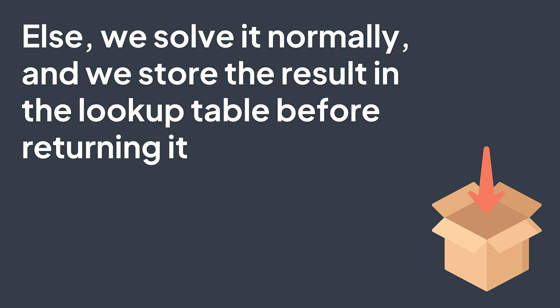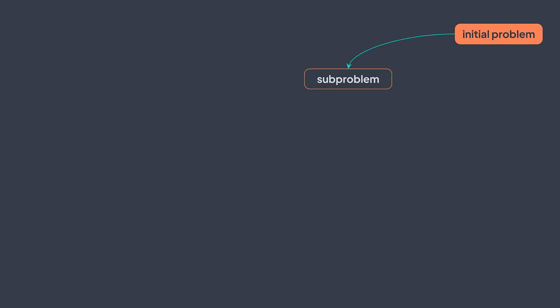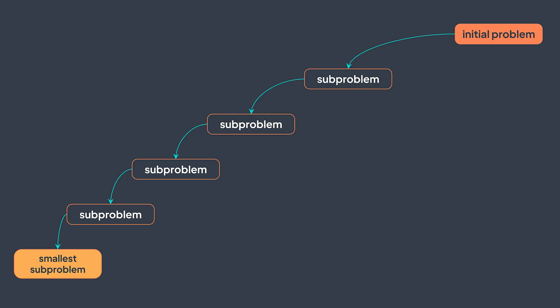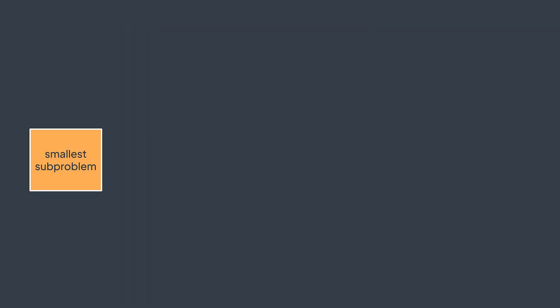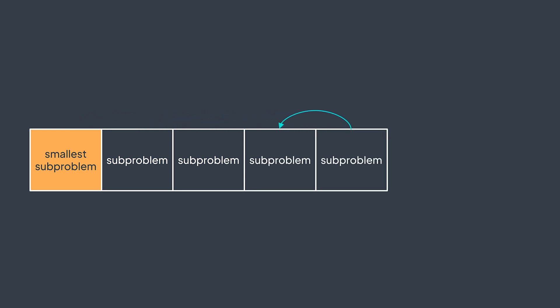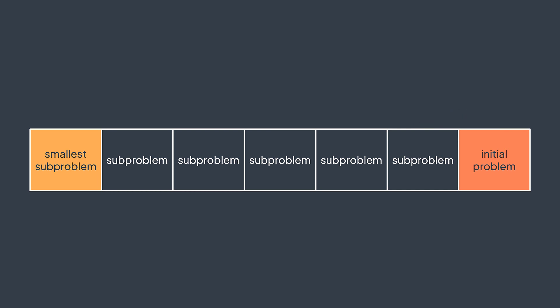It's called the top-down approach because it starts by attempting to solve the initial problem, which requires solving smaller and smaller subproblems until it reaches the smallest possible ones. The bottom-up approach does the opposite: it starts by solving the smallest possible subproblems, then keeps solving bigger and bigger subproblems using previously computed results, until it reaches the one we wanted to solve. This process is usually done iteratively, using some extra space to store results of intermediate subproblems.